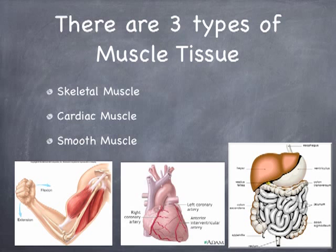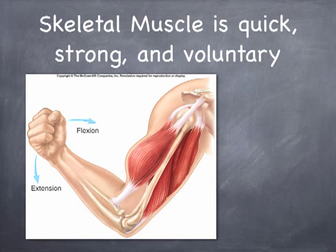So three types here: skeletal, cardiac, and smooth. Let's look at each one in a little more detail.